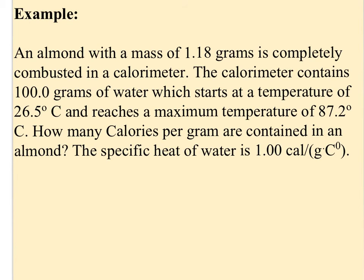A second common use of a calorimeter is to look at the energy contained within a food source or fuel source. An almond with a mass of 1.18 grams is completely combusted in a calorimeter. The calorimeter contains 100 grams of water which starts at 26.5°C and reaches a maximum temperature of 87.2°C. How many Calories per gram are contained in an almond? I'm given the specific heat of water in calories because I'm asked to calculate kilocalories per gram.